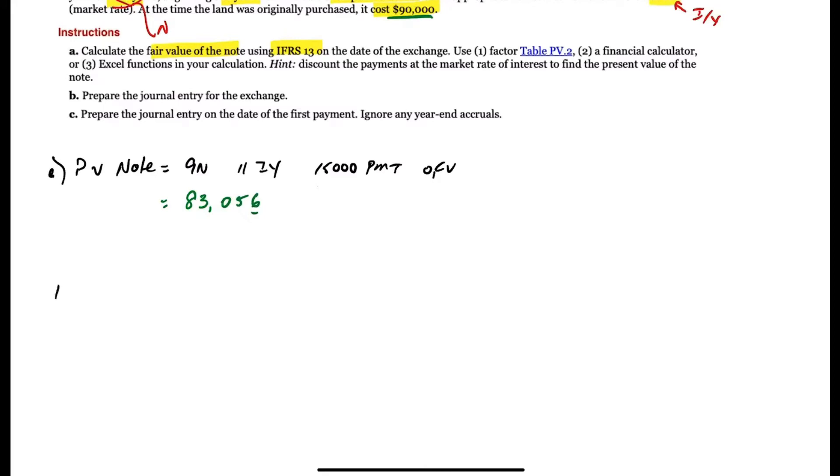Part B here is going to be the journal entry. We are going to debit a note receivable for $83,056, because that's what the present value of the note is. We're going to credit land for its carrying value of $90,000, and its carrying value is equal to the original cost, because land is a non-depreciable asset, so there is no accumulated depreciation on land. This should also be some review as well.